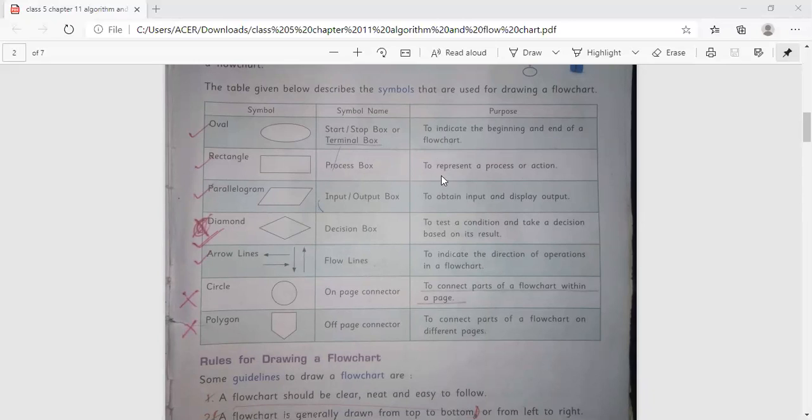Rectangle is the process box to represent a process or action. Parallelogram is the input output box to obtain input and display output. Diamond is the decision box to test a condition and take a decision based on its result. Arrow lines are flow lines to indicate the direction of operations in our flowchart. Circle is the on-page connector to connect parts of a flowchart within a page. Polygon is the off-page connector to connect parts of a flowchart on different pages.